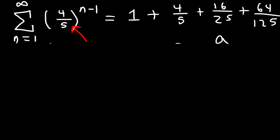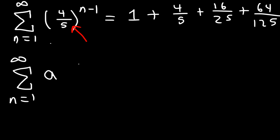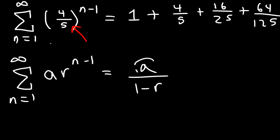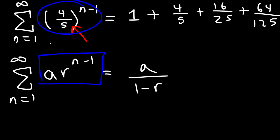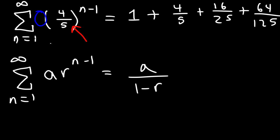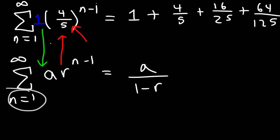If you don't want to list out the sequence, you can determine the first term and common ratio directly. For a series with sequence a times r raised to the n minus 1, the sum is a over 1 minus r. So a is the first term. In the previous example, the number in front of 4 over 5 is an invisible 1, so a is 1 and r is 4 over 5. Notice that n starts at 1 and we have n minus 1 in the exponent.